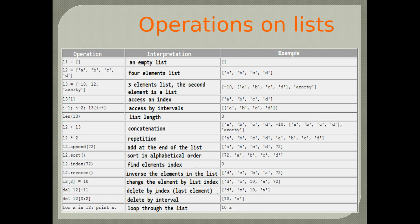Operations on lists: create an empty list, create a list with four elements, a list with another list as an element. Access elements by index or by interval of indexes, add/concatenate lists, and repeat a list. You can add elements to a list at the end, sort the list, find an element's index, reverse the list, change a list element by index, delete an element by index, delete by interval, and loop through the list.